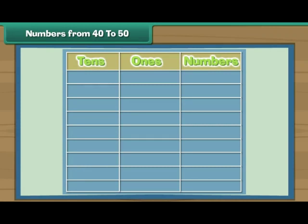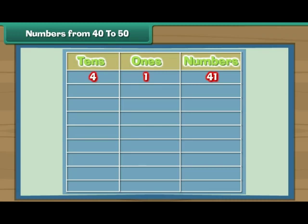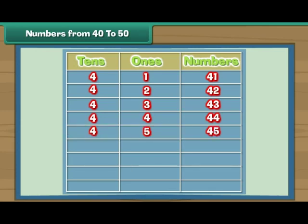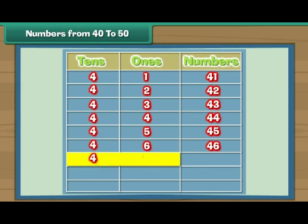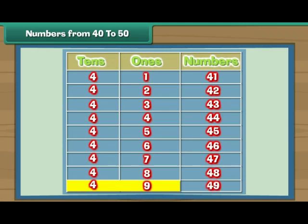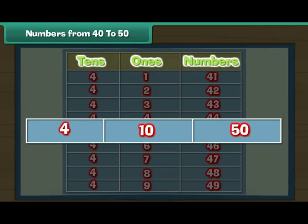Let us now complete this table. Four tens and one give the number 41. Four tens and two give 42. Four tens and three give 43. Four tens and four give 44. Four tens and five is 45. Four tens and six is 46. Four tens and seven is 47. Four tens and eight is 48. Four tens and nine is 49. Four tens and ten give five tens — that is 50.